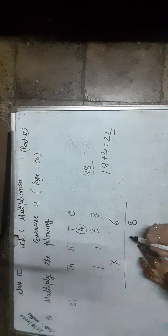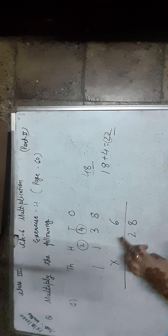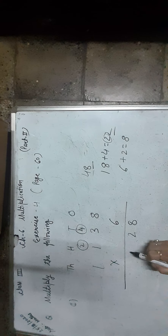Find the product of 1,138 and 6. Start from the 1s place digit: 8 × 6 is equal to 48. We write 8 in the 1s place and carry 4 to the 10s place. Now, 3 × 6 is equal to 18, plus 4, equals 22. We write 2 in the 10s place and carry 2 to the 100s place.